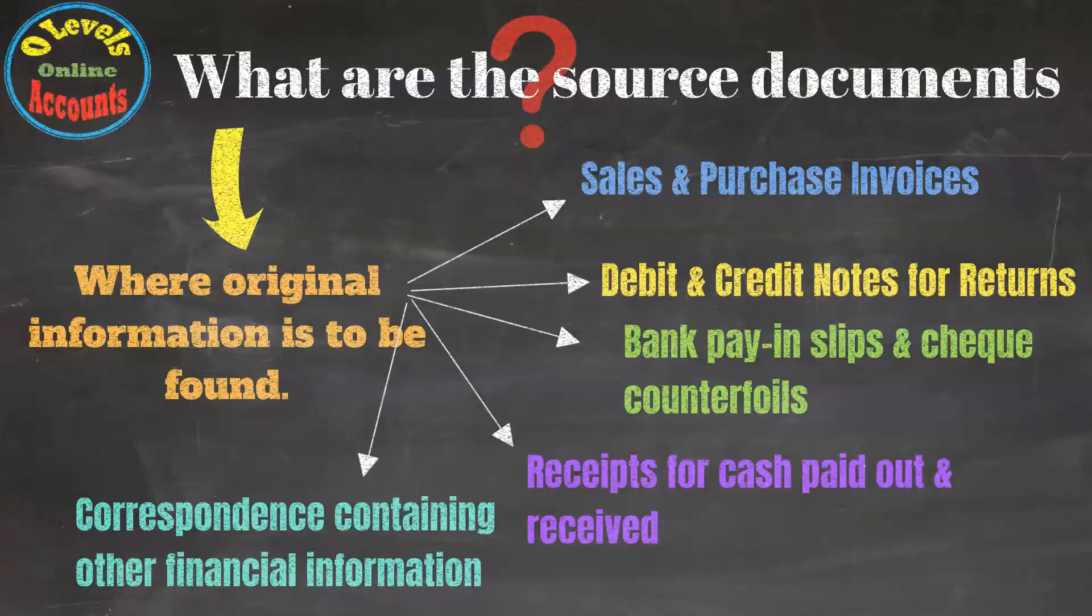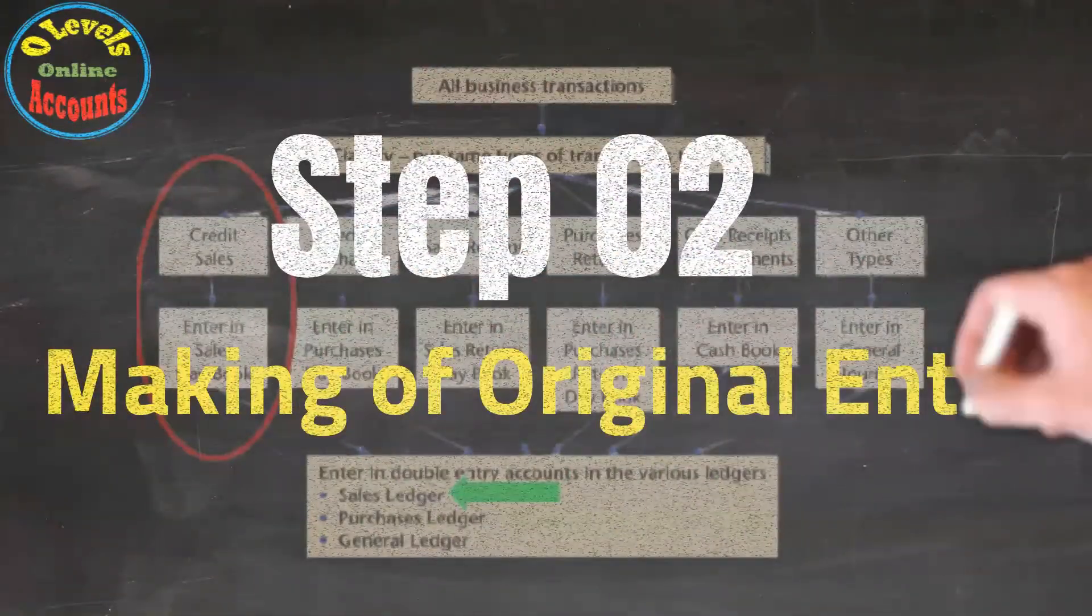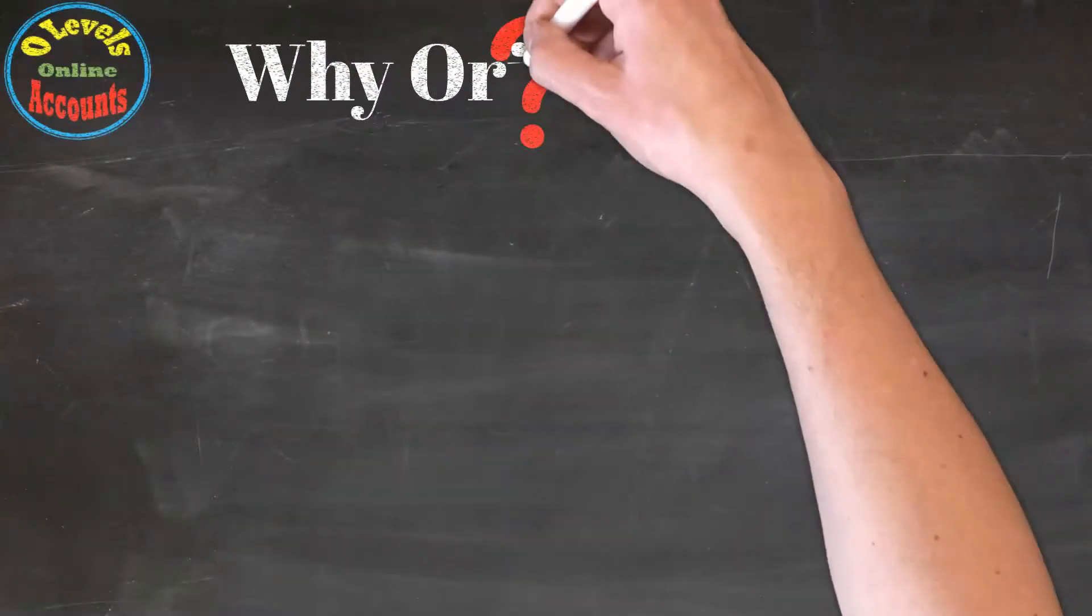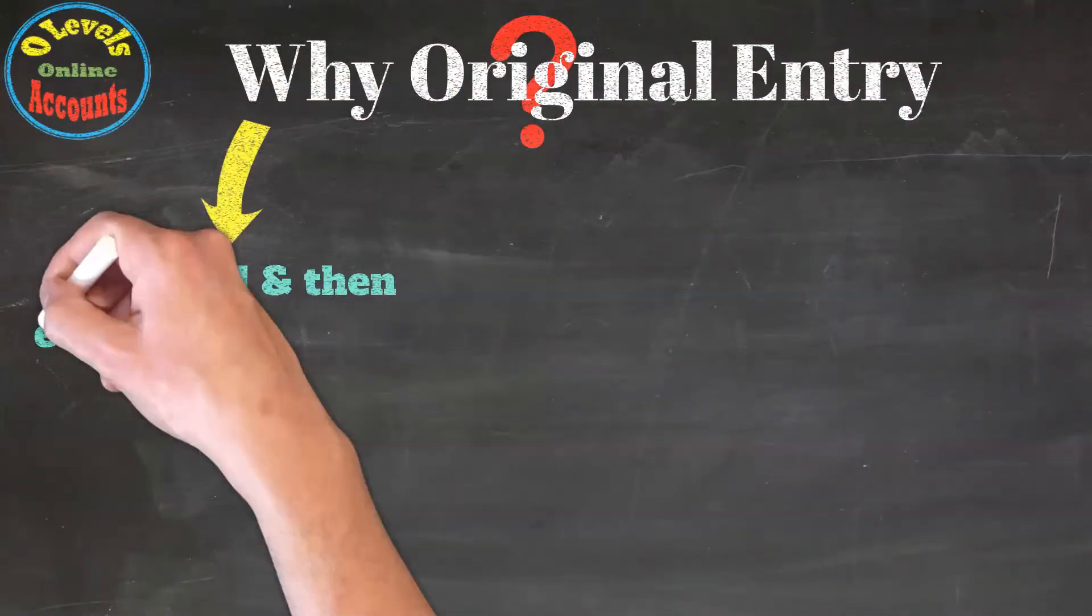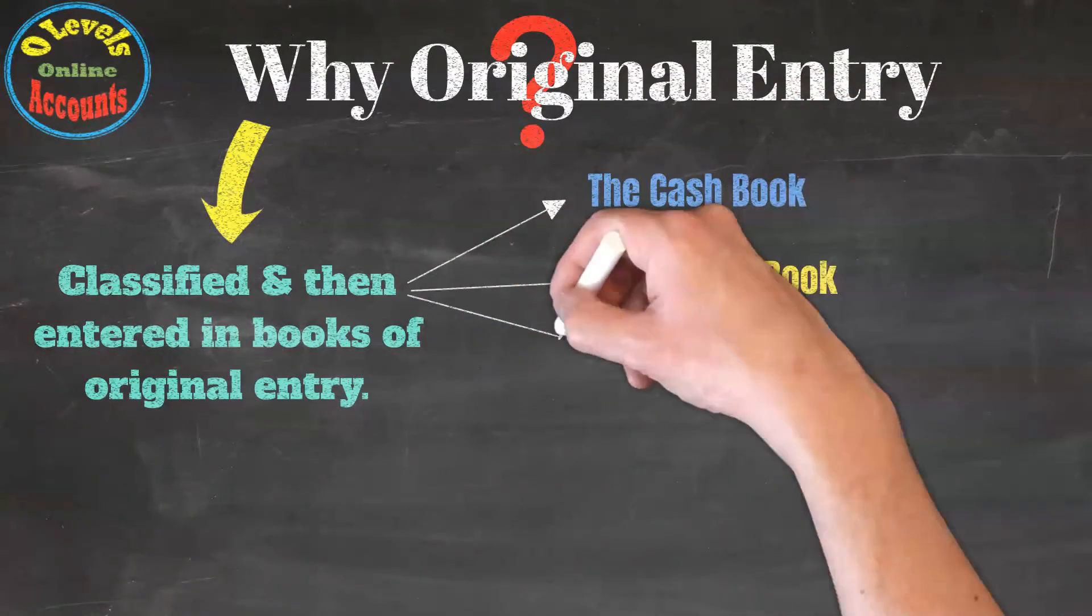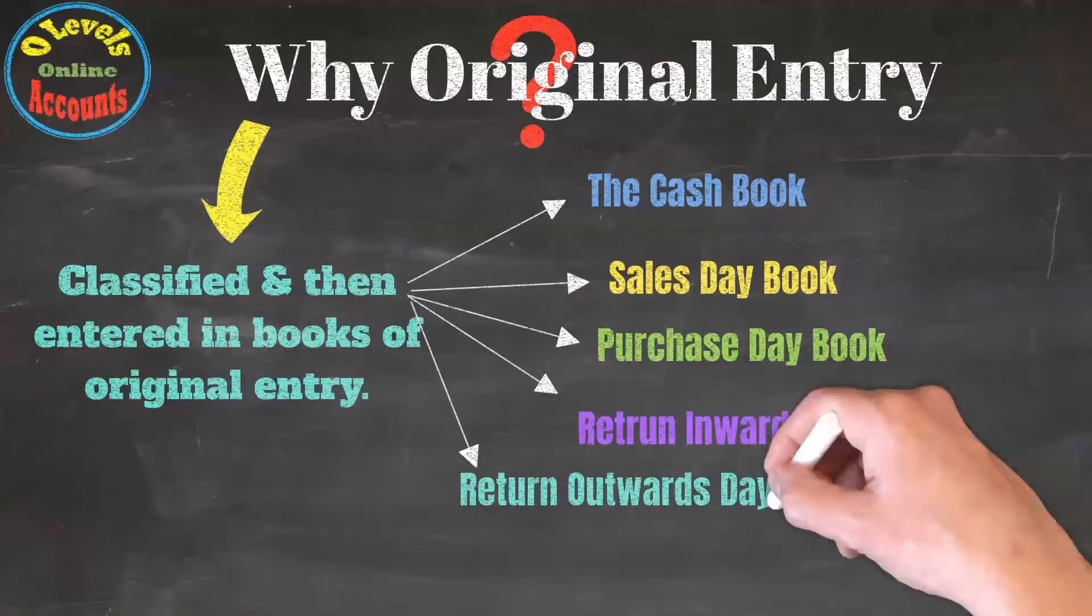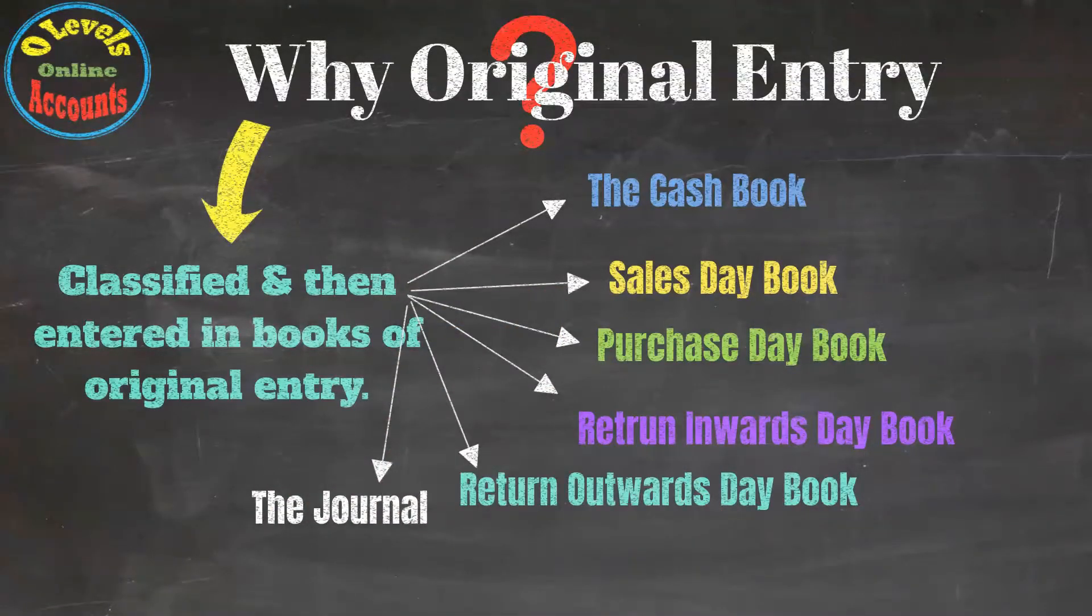The second step is making original entries. After classification, transactions are entered in the related books of original entry. These books include the cash book, sales day book, purchase day book, returns inward day book, returns outward day book, and the journal.